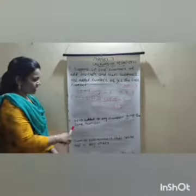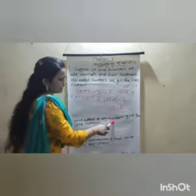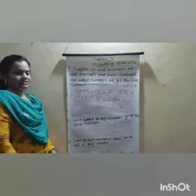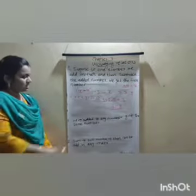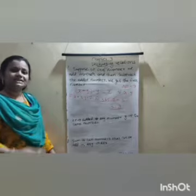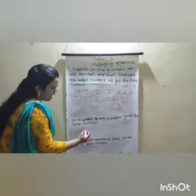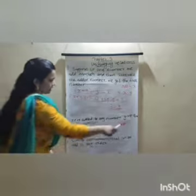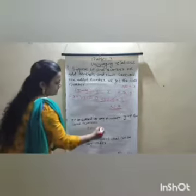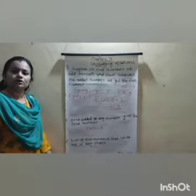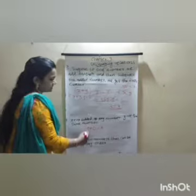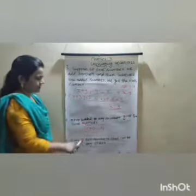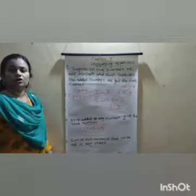The second question: zero added to any number gives the same number. This is the addition property. Zero added to any number — your number means X. So X plus 0 equals X. This is another statement: zero added to any number gives the same number, X plus 0 equals X.